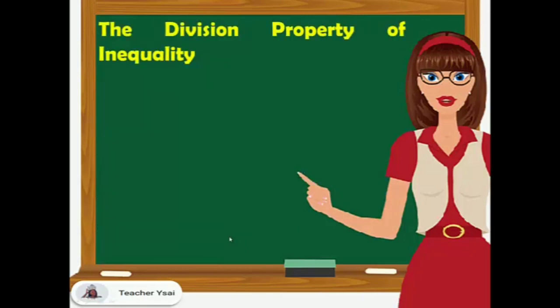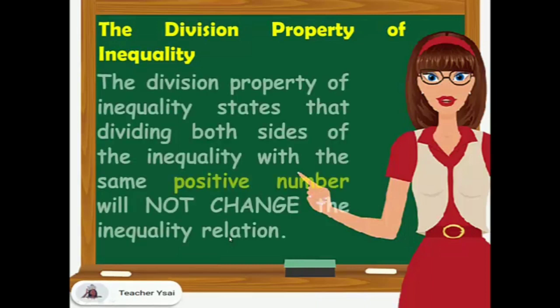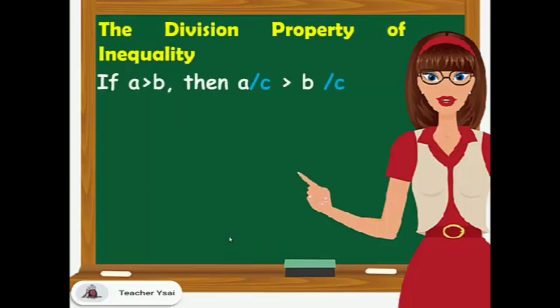Dividing both sides with a positive number: if A is greater than B, then A divided by C is still greater than B divided by C. If A is lesser than B, then A divided by C is lesser than B divided by C.